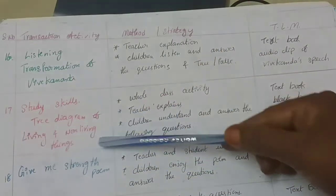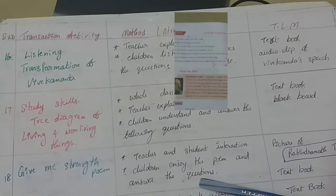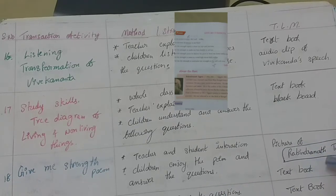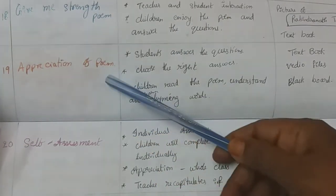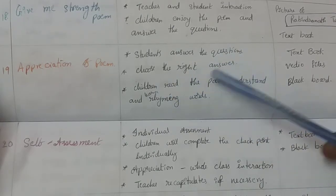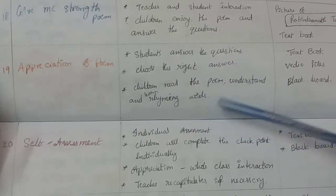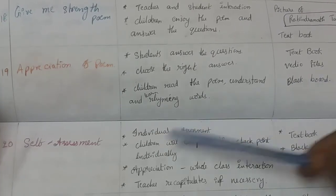In period 18, the poem 'Give Me Strength' is taught. Teacher and students interact, children enjoy the poem and answer the questions. TLM: picture of Rabindranath Tagore and textbook. In period 19, it is an appreciation of the poem. Students answer questions and choose the right answer. Children read the poem and understand the rhyming words. TLM: textbook, video files and blackboard.